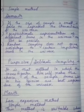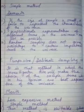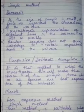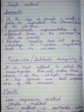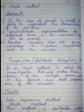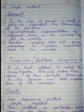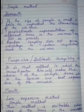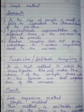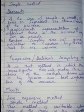Demerits of random sampling: First demerit — if the size of the sample is small, it fails to represent the characteristics of the universe. When very few items are selected, the full character of the universe cannot be represented. Therefore this method cannot be properly applied when the sample size is small.